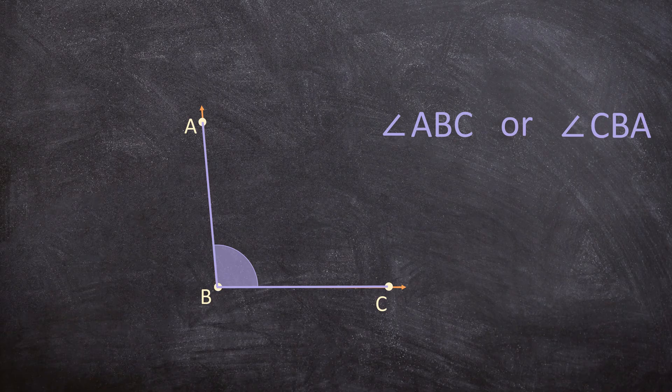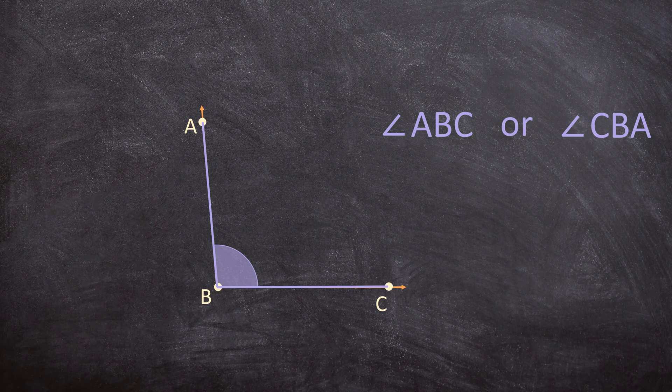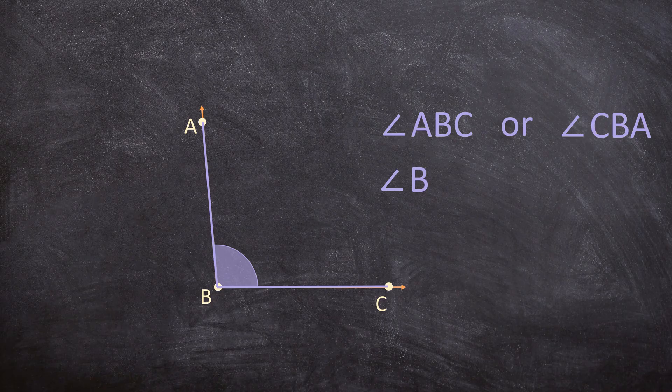But there's another name you can give to this angle but I want you to be really careful when using this name. You can also say in this case angle B because B only has one angle, that is why you can use this name.